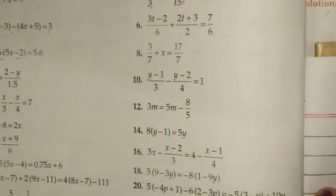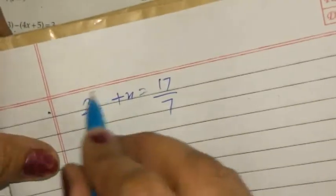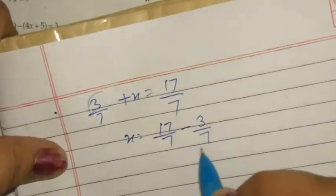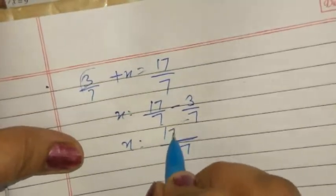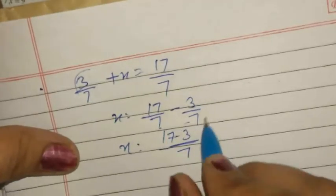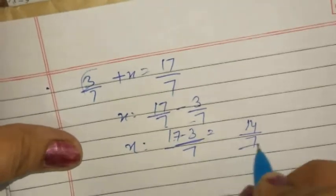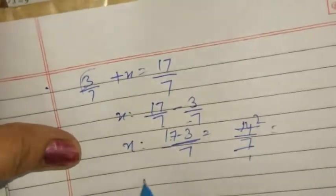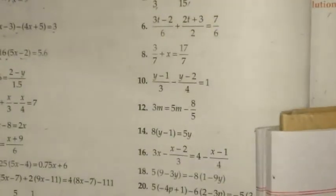Question 8: solve 3x/7 + x = 17/7. Transposing 3/7 to the right: x = 17/7 - 3/7. Since denominators are the same: x = (17 - 3)/7 = 14/7 = 2.